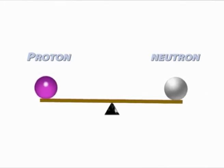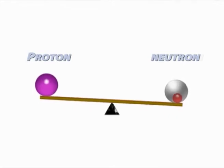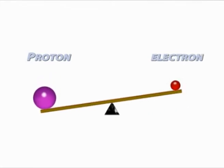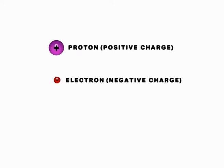Protons and neutrons are about the same size and weight as each other while electrons are much smaller and lighter. Protons have a positive charge, electrons a negative charge and neutrons have no charge.